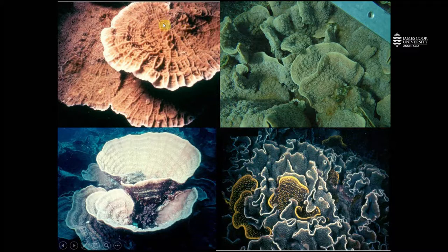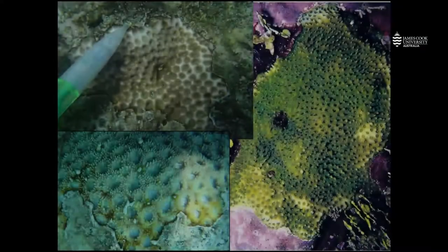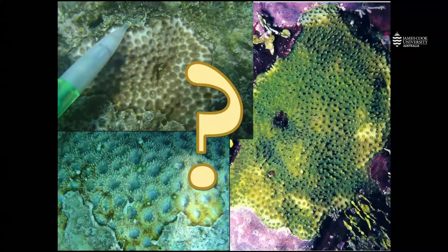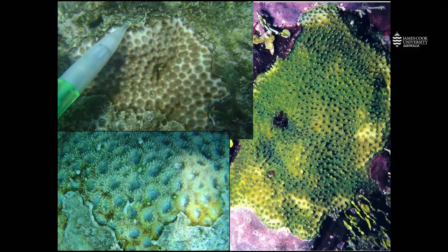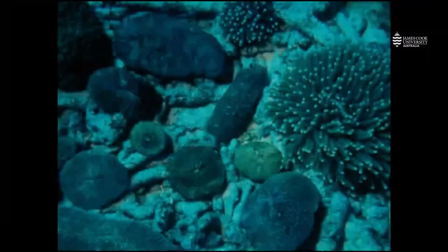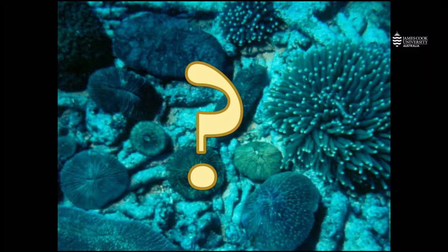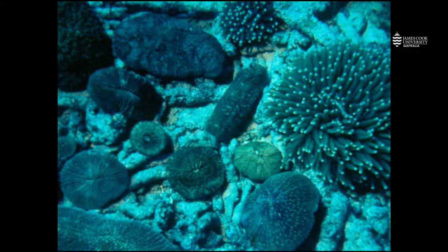These corals are growing as a thin crust over the substratum. These corals are growing as discs or domes, but they're not attached to the reef surface.